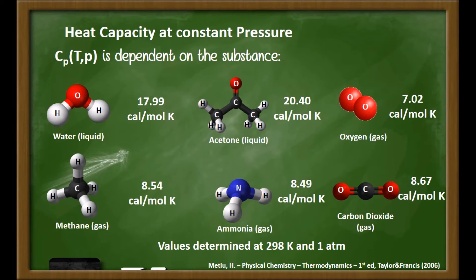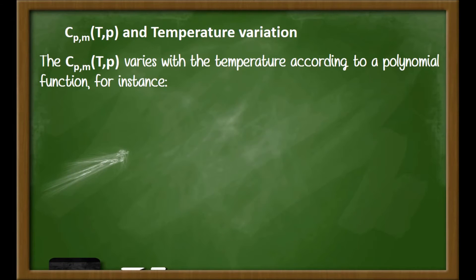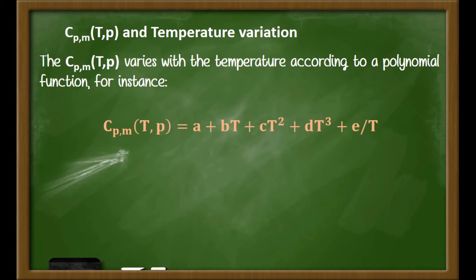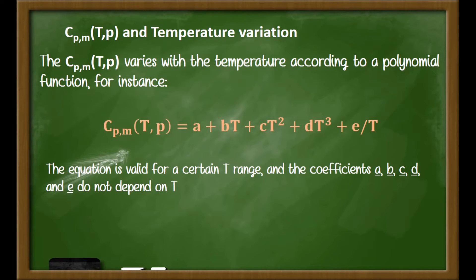Higher heat capacity values mean that it is harder to change the temperature of that substance by 1 Kelvin. Heat capacity at constant pressure varies with temperature according to a polynomial function. For instance, heat capacity can be equal to a coefficient A (independent of temperature), plus B times T, plus C times T squared, plus D times T cubed, plus E divided by T.